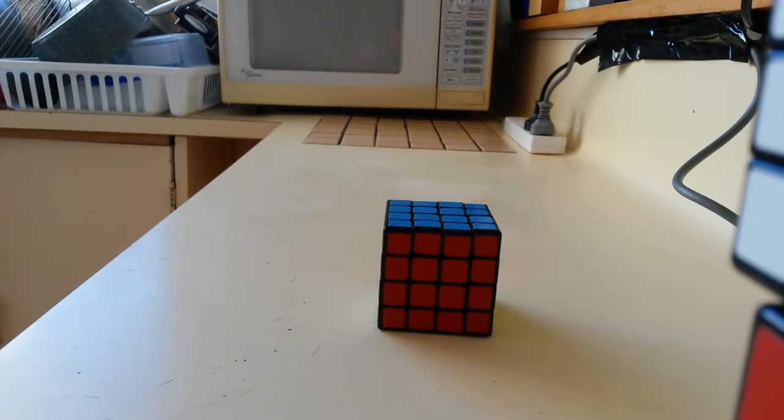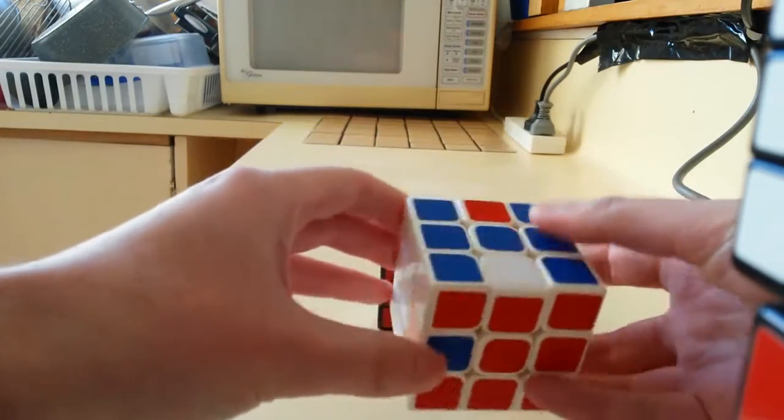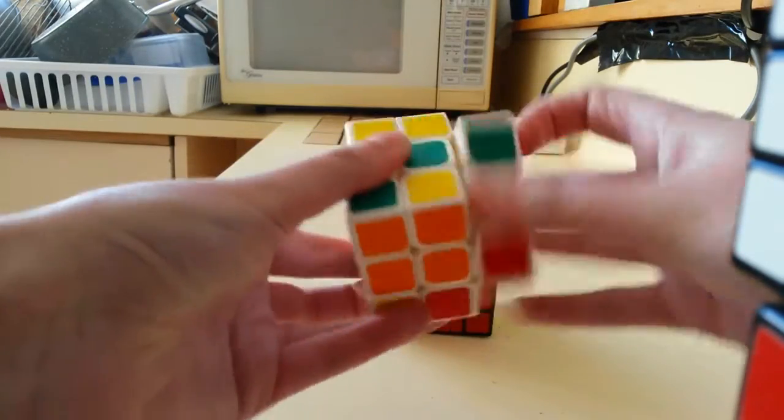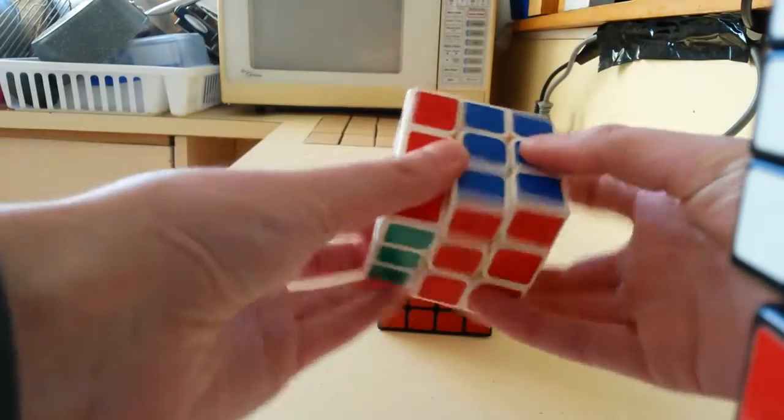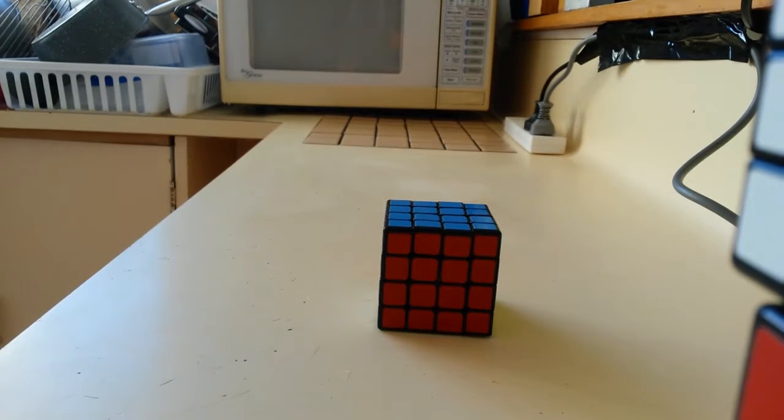Hey guys, just gonna do a quick tutorial for Turbo Wings on 4-Blind. It's the same idea as 3-Blind, just setting up to the two pieces next to the buffer, doing a 3-cycle and undoing the setup. So it's just 8 algorithms, or 4 plus inverses.